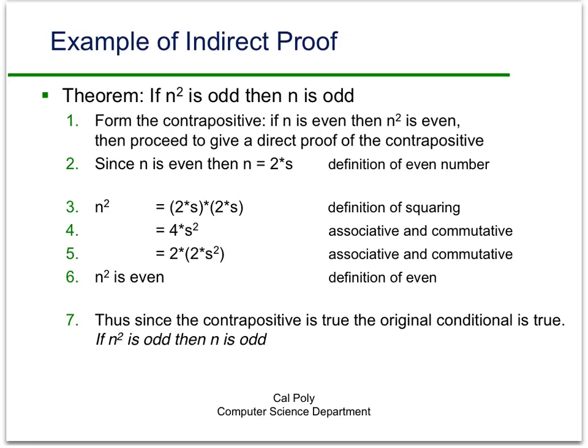So here's our first example. We want to prove the theorem: if n squared is odd, then n is odd. Now if you try to do this directly, you'll see that you're going to run into some problems because you're going to have to try to take the square root to determine what n looks like in terms of n squared. And that can be done in some circumstances, but it's tricky.